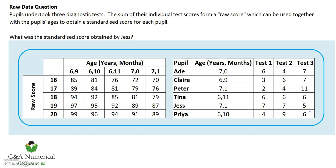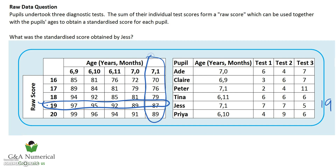We're adding those three test scores together: seven and seven and five, which is nineteen. So our raw score is nineteen. We go over to the left table and find nineteen — let me highlight that whole row. Jess was seven years and one month of age, so I'll find that column and highlight it too. All we're looking for is the intersection of that row and column.